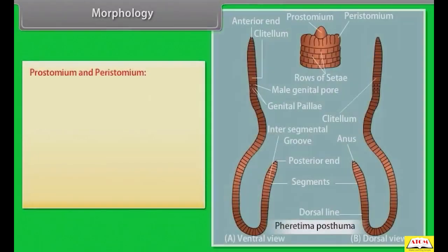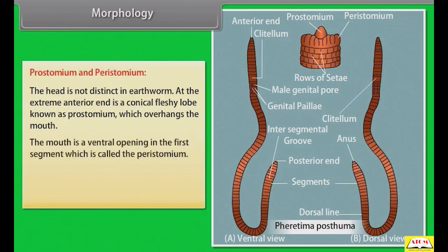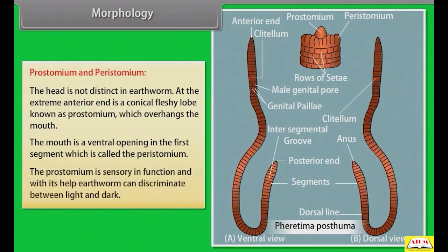The head is not distinct in earthworm. At the extreme anterior end is a conical fleshy lobe known as the prostomium, which overhangs the mouth. The mouth is a ventral opening in the first segment called the peristomium. The prostomium is sensory in function, and with its help the earthworm can discriminate between light and dark.